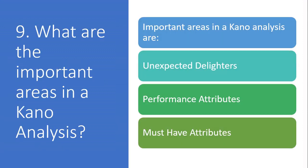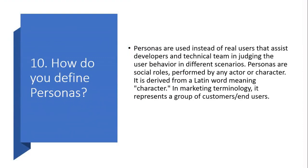Question 9: What are the important areas in a Kano analysis? The important areas in a Kano analysis are: Unexpected delighters, Performance attributes, and Must-have attributes. Question 10: How do you define personas? Personas are used instead of real users to assist developers and the technical team in judging user behavior in different scenarios. Personas are social roles performed by any actor or character, derived from a Latin word meaning 'character.' In marketing terminology, it represents a group of customers and users.